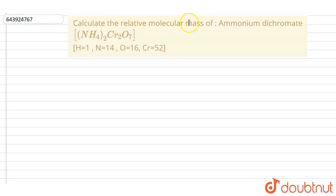Calculate the relative molecular mass of ammonium dichromate. We are given with the atomic mass of hydrogen atom, nitrogen atom, oxygen atom and chromium atom.